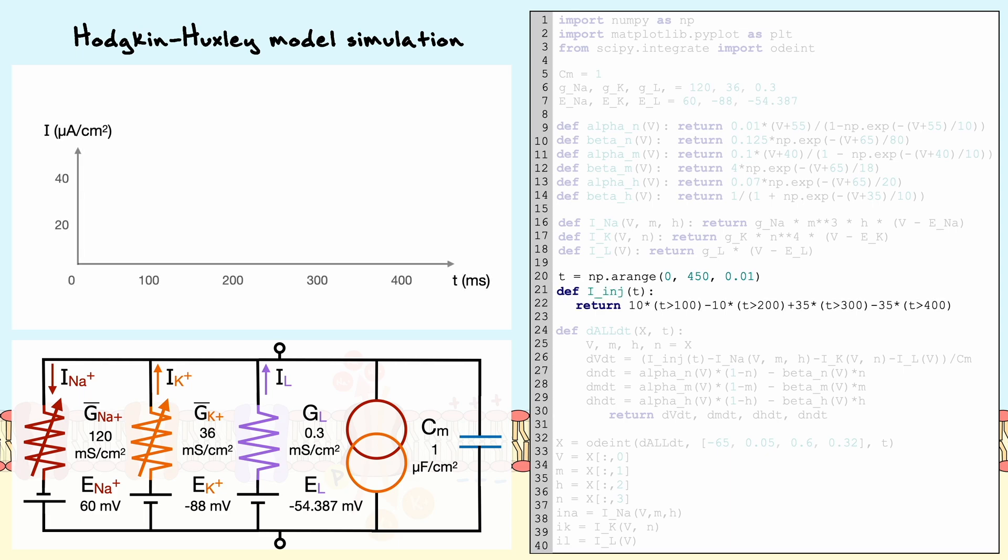For the injected current, basically what is modeled here is many conditions that will give us intervals of current injection. In the code, we have 5 intervals. In the first interval from 0 to 100 milliseconds, no conditions are matched, so the injected current returns 0.